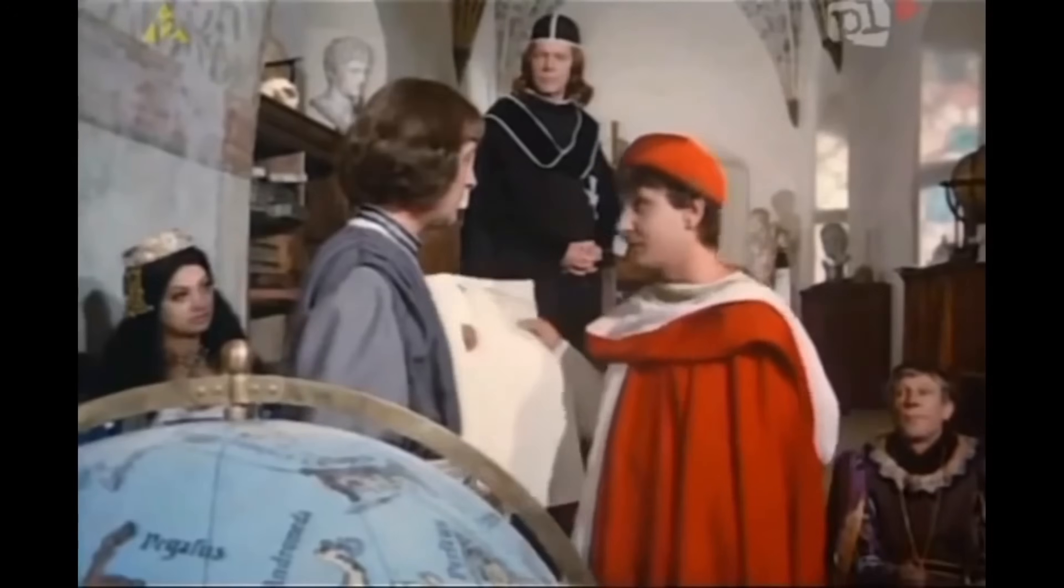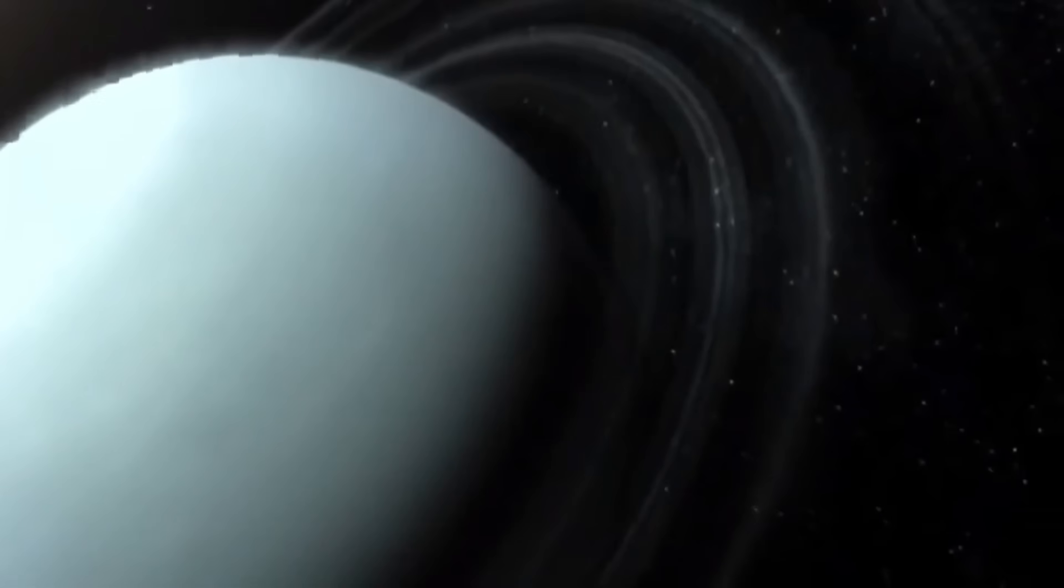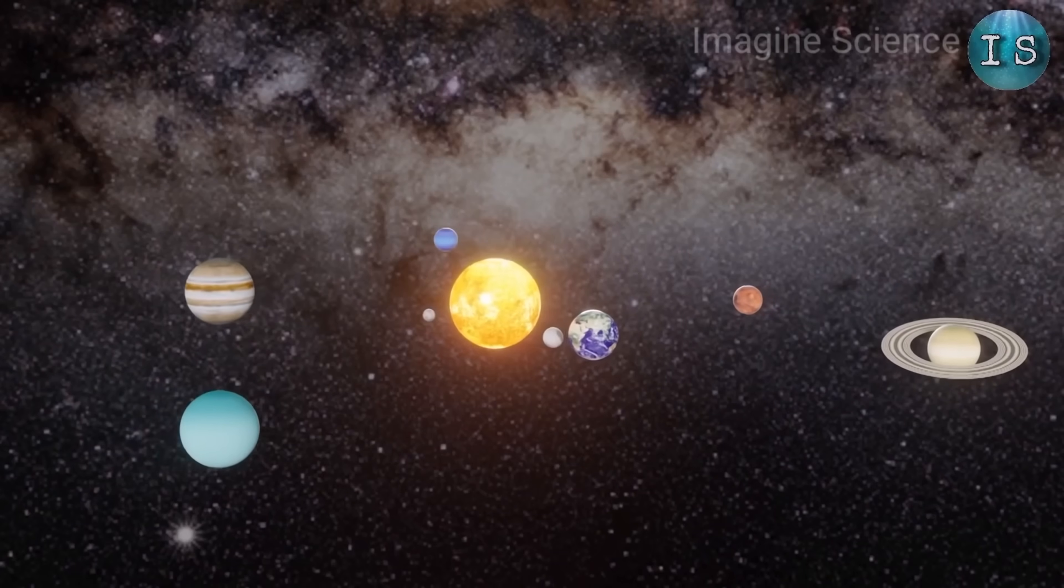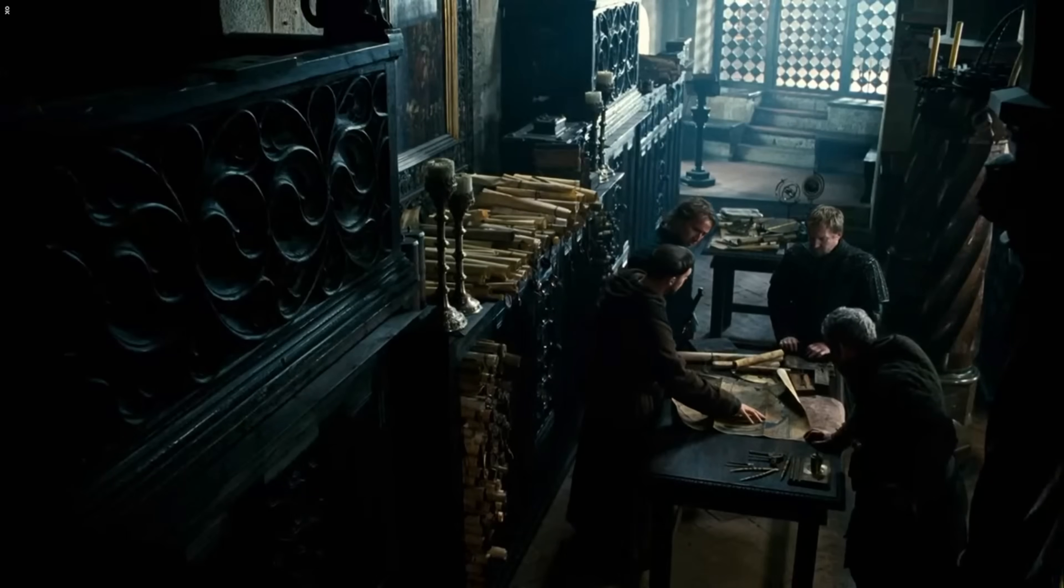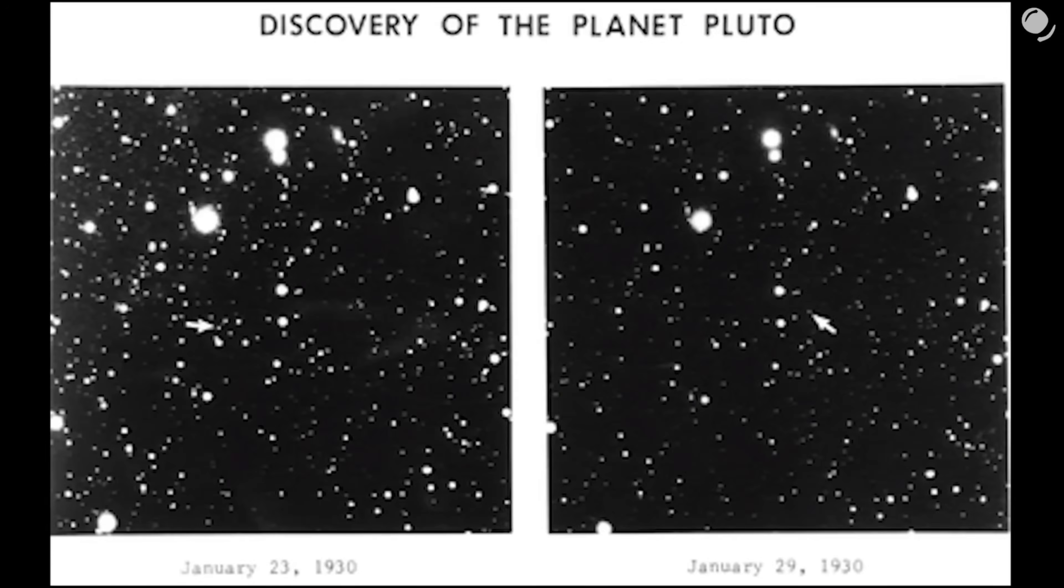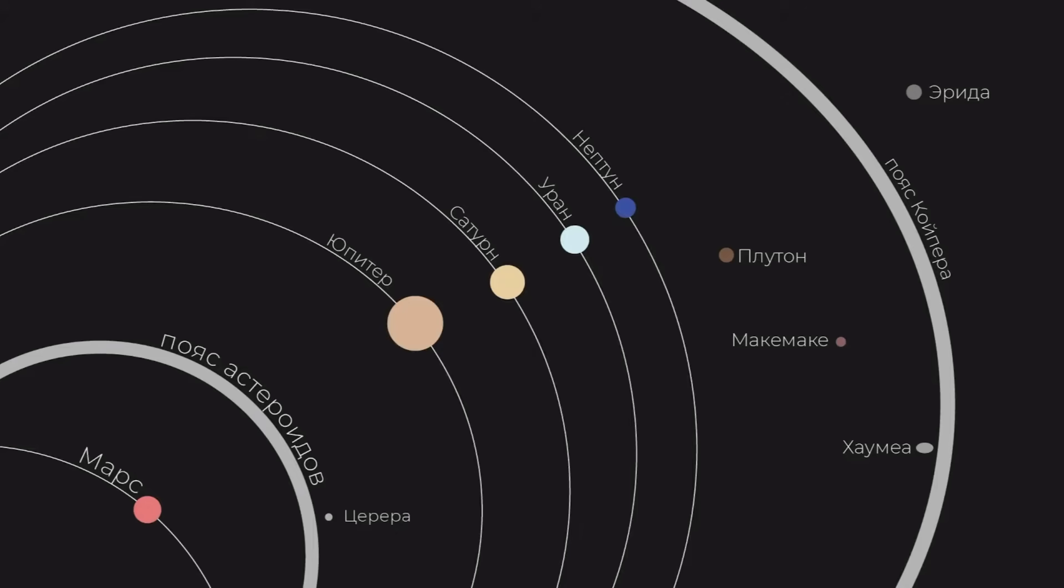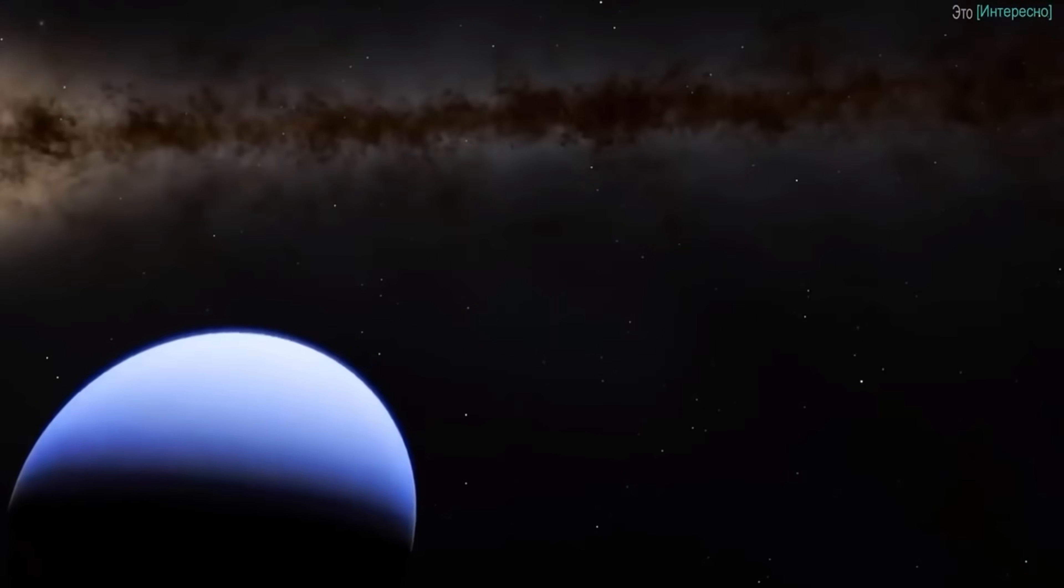But in his time, Uranus and Neptune were not yet known to mankind. Seven neighboring planets of the Earth were finally found only in 1846. Pluto was spotted even later in the 1930s. And other dwarf planets from the Kuiper Belt are being found to this day.